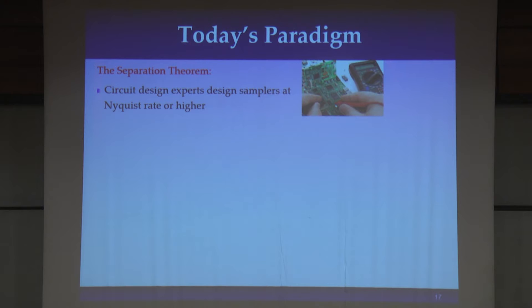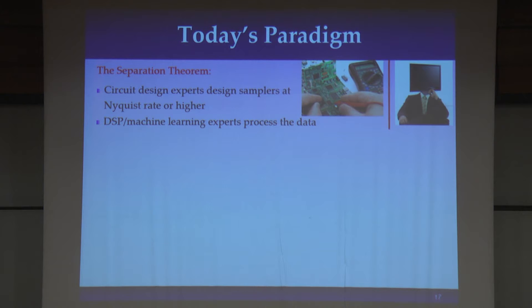What happens today? We have all these cool digital devices — so how do they work? Well, here we have what I call the separation theorem — not a mathematical theorem, but a theorem about people. On the one hand, we have circuit design experts whose goal is to accommodate wider and wider signals and give us more and more bits. On the other side of the room, behind a very tall brick wall with little communication between the two groups, we have the signal processing or machine learning people, and what we do is get all of this data and somehow process it.